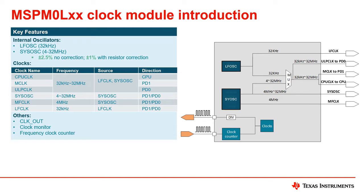LFOSC and SISOSC source a variety of different clocks listed in the table and shown in the block diagram. The clocks that connect to the peripherals are in two different power domains. MF clock and LF clock are fixed frequency clocks. For more information on low power states, please watch the MSPM0 low power modes video.